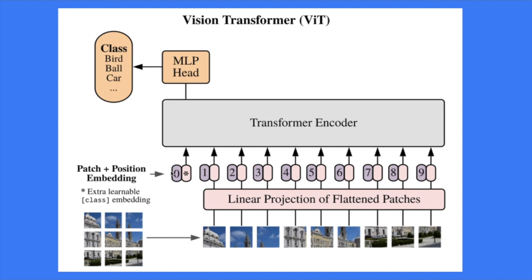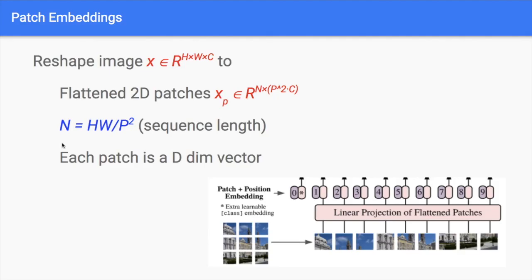Then you fit this into the transformer encoder. The transformer encoder consists of a lot of transformer blocks. One block consists of one self-attention layer and two multilayer perceptron layers — or you can call them feed-forward neural networks. After that, you have a multilayer perceptron on top to do the prediction, with dimension equal to the number of your classes.